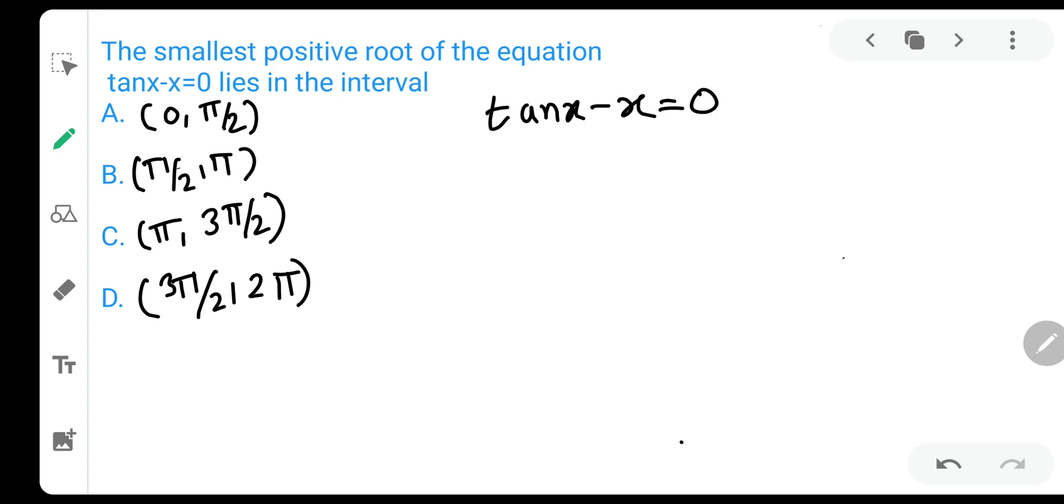So what are we going to do? We are going to write this as tan(x) = x. It means there will be some places at which the value of tan(x) and the value of x will be equal, and we need to tap those places.